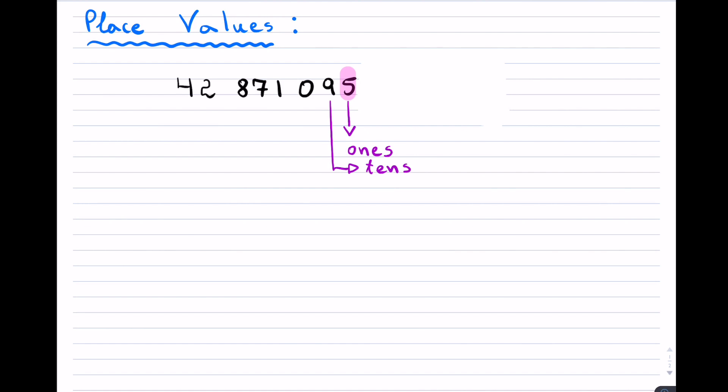Because we start counting once we finish with the ones, we move over to the place value of tens. The 1 that follows, right here, is known as the hundreds.